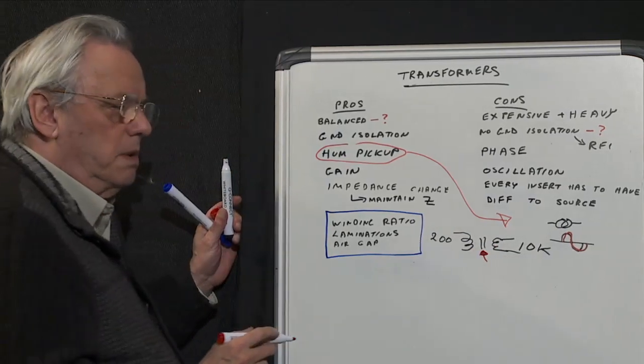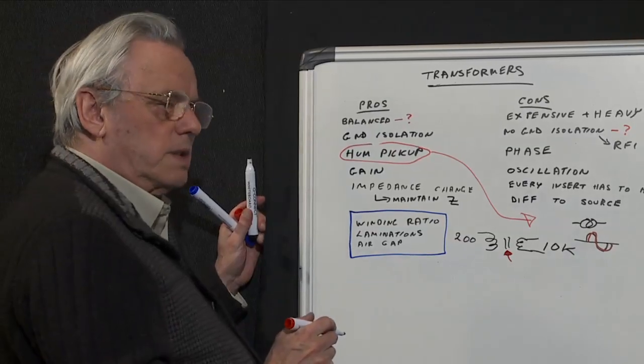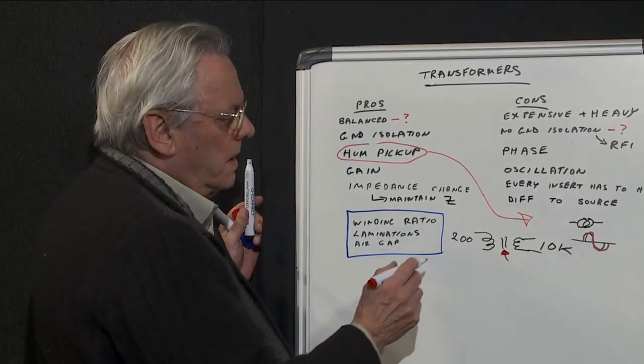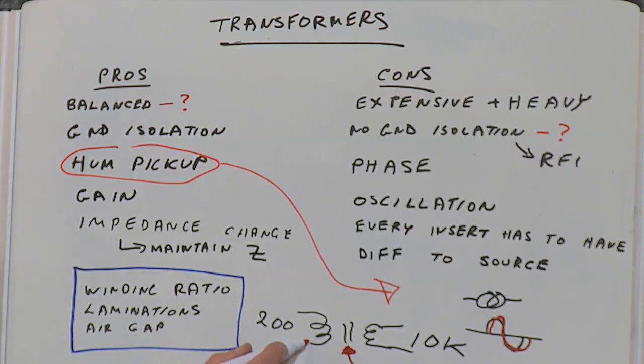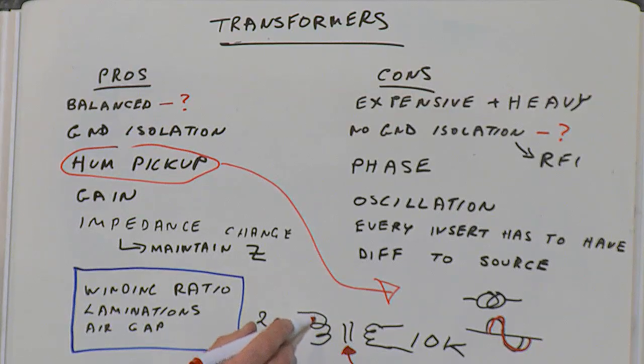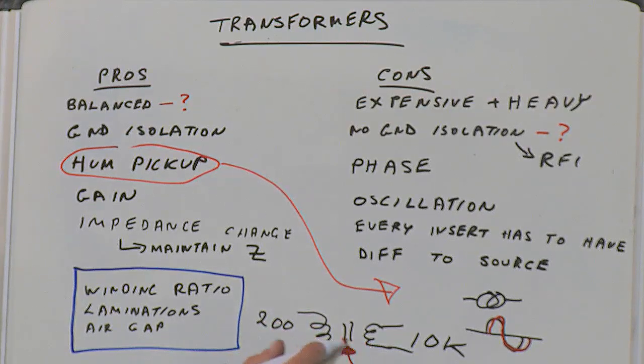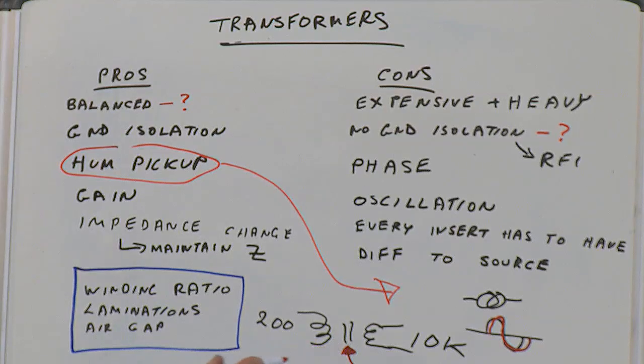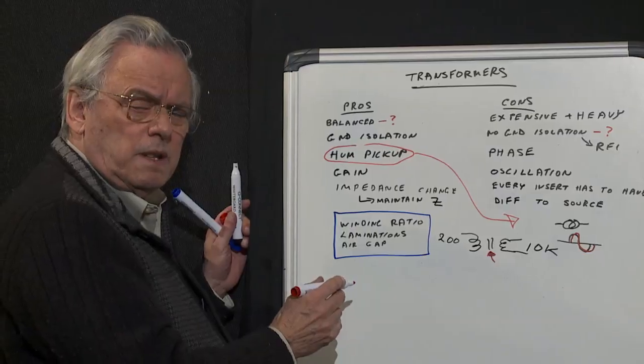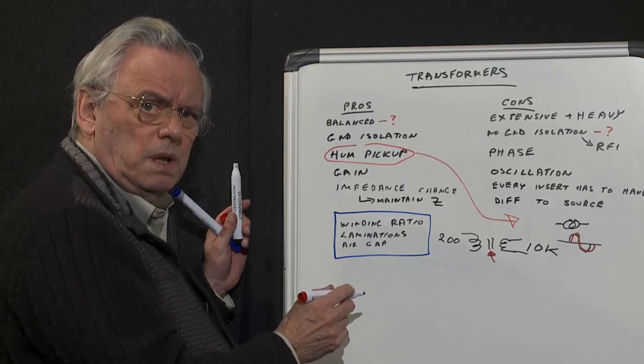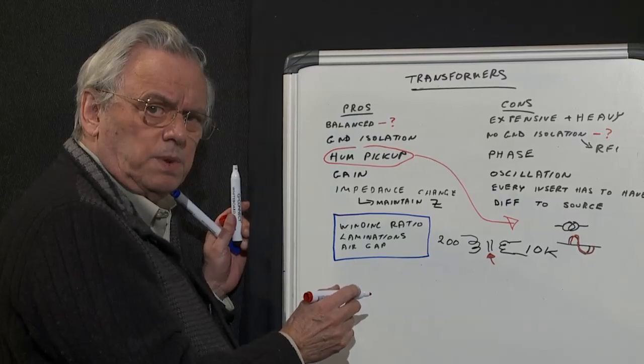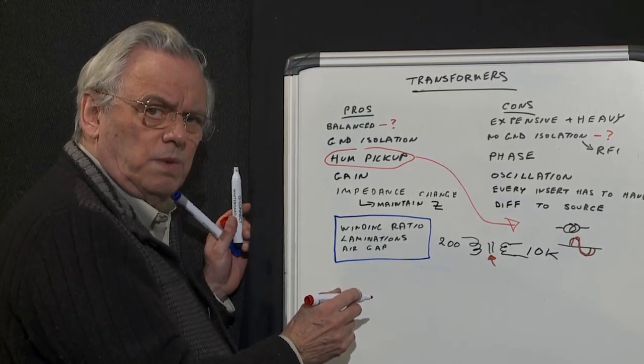Another thing to note about mu metal laminations is never ever connect any DC voltage across the primary or indeed the secondary—the primary in particular—because then you could permanently magnetize the laminations in your transformer, and not to put too fine a point on it, your transformer is then buggered.